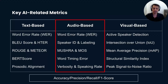Mean Opinion Score (MOS) is used for any system generating or modifying audio. It is a subjective quality metric often used in telecommunications to assess audio quality. Word timing error is an important metric that measures the deviation of predicted start and end times for words or phonemes in an ASR system from the original audio file.